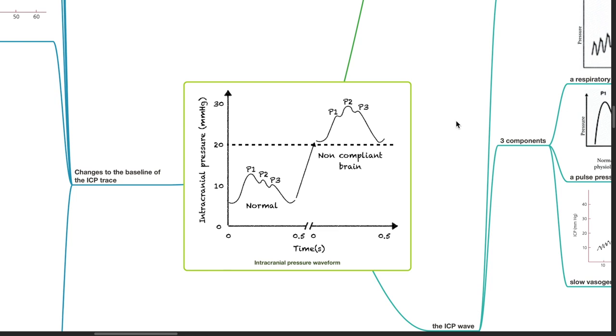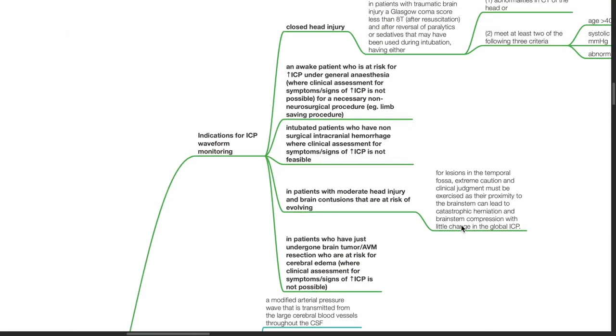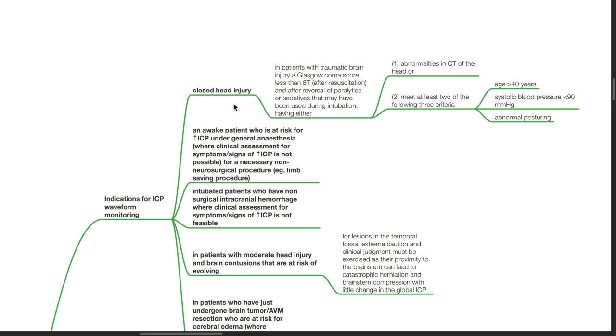Next, we move on to the intracranial pressure waveform. Indications for ICP waveform monitoring include closed head injury in patients with traumatic brain injury, a Glasgow Coma score of less than 8T after resuscitation and after reversal of paralytics or sedatives that may have been used during intubation, having either abnormalities in CT of the head or meeting at least two of the following three criteria: age more than 40 years old, systolic blood pressure less than 90 mmHg, and abnormal posturing.